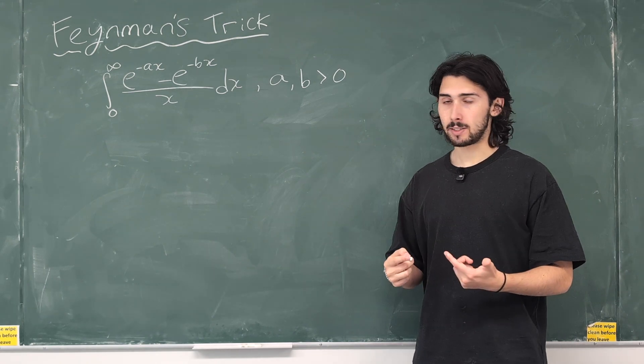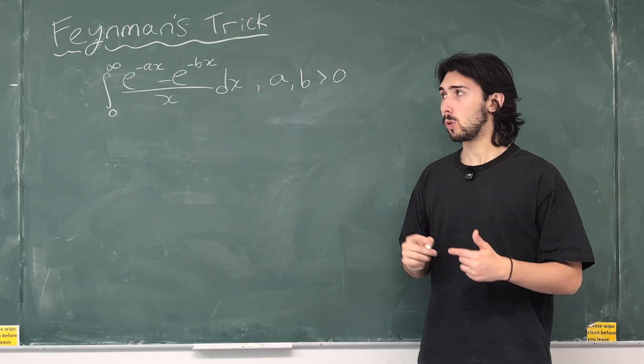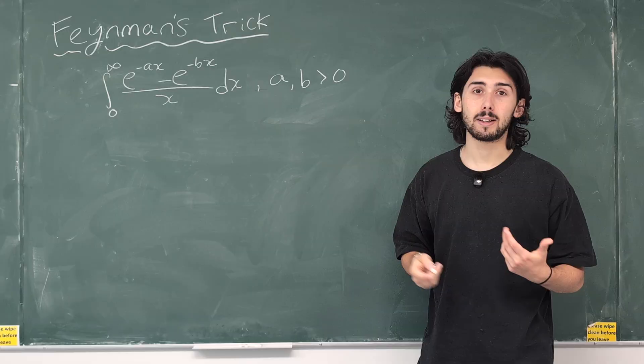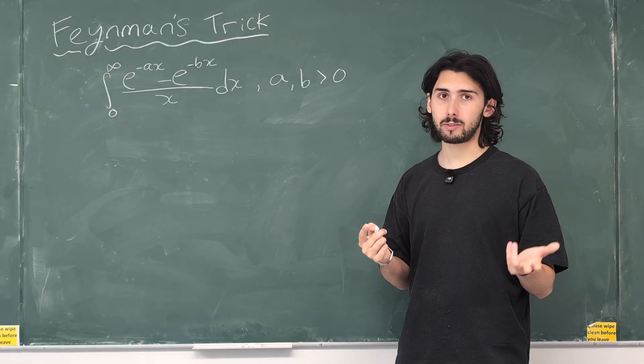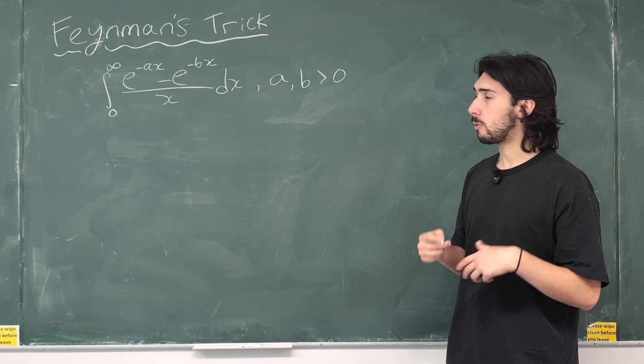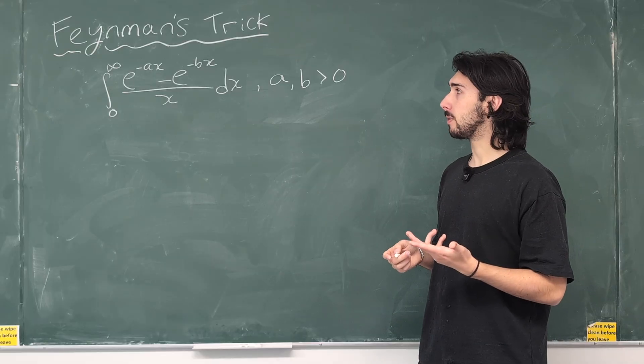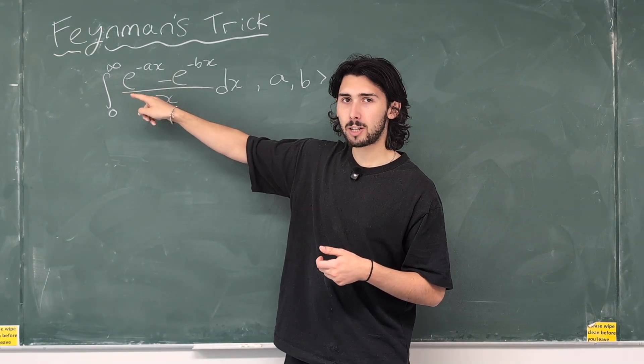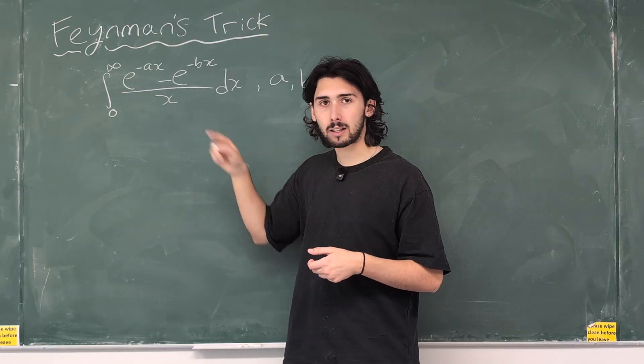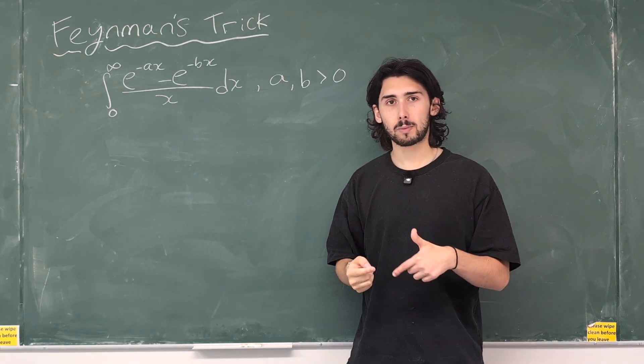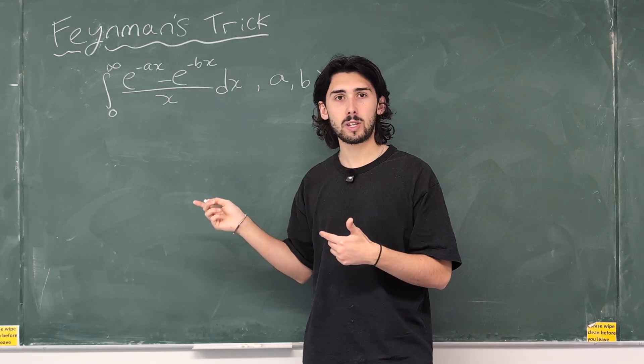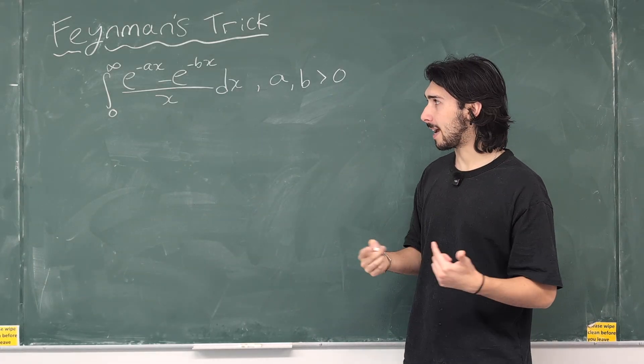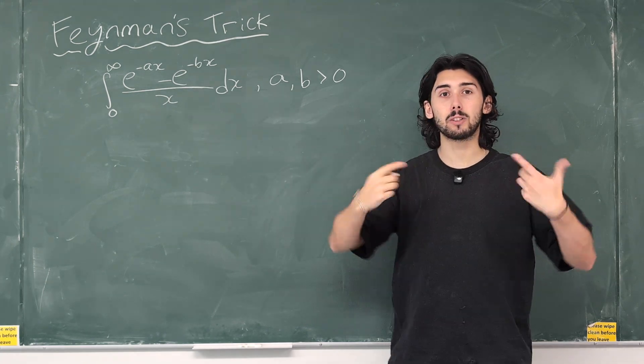If we differentiated this thing here with respect to, let's say, the variable a, that, well, technically it's a constant, but if we treat it as a variable right now, if we differentiate with respect to it, then we're going to get an x come down via the chain rule that's going to cancel out with this x.